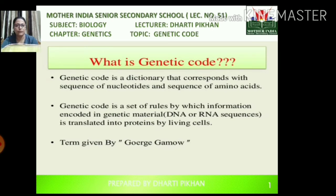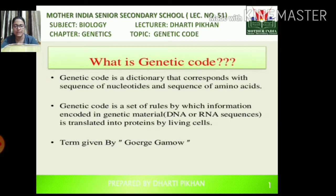First of all, what is genetic code? It is a dictionary that corresponds with the sequence of nucleotides and the sequence of amino acids. Genetic code is a set of rules by which information is encoded in the genetic material and is translated into proteins by the living cells. The term genetic code was given by George Gamow.